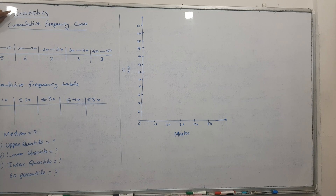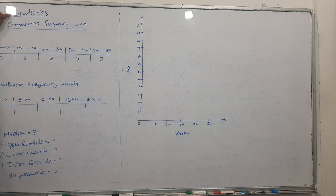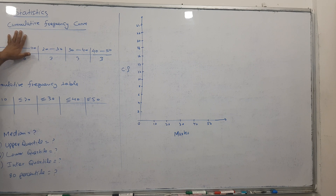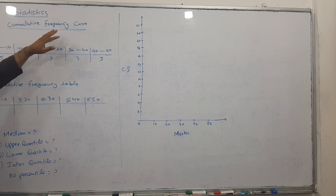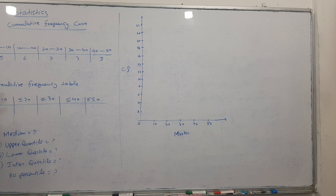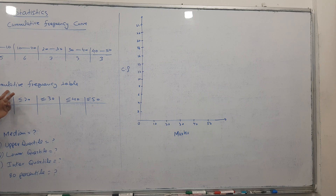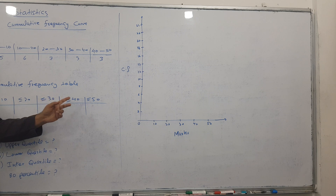Today's topic is O level statistics, and the further topic is cumulative frequency curve. We have been given a table of marks and number of students. We have to make a cumulative frequency table first of all.